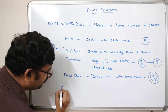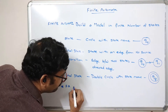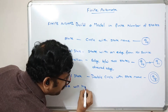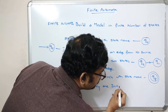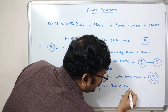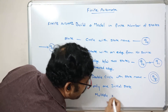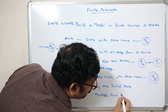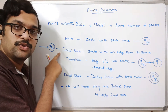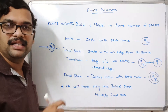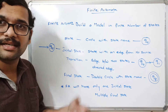One important point: this finite automata will have only one initial state — from only a single path it should start — and it may have multiple final states, or it may not. So we have to construct the finite automata accordingly.